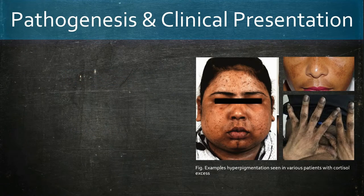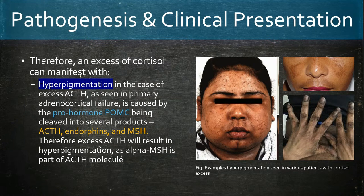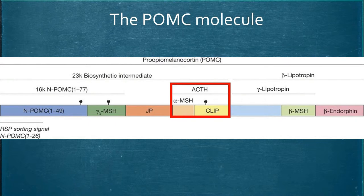A surplus of ACTH can also result in hyperpigmentation. This occurs due to the nature of the ACTH molecule and where it comes from — the POMC molecule. ACTH consists of alpha-MSH and a CLIP component. Consequently, if there is an increase in ACTH for whatever reason, there is an increase in MSH, which then stimulates melanin production, resulting in hyperpigmentation.